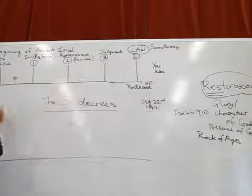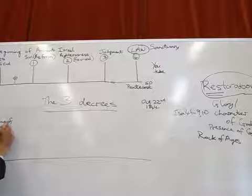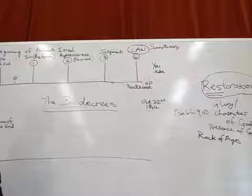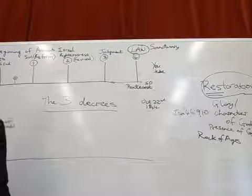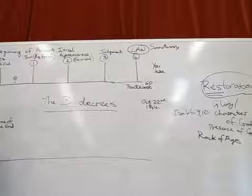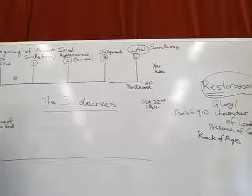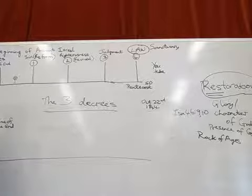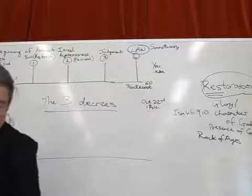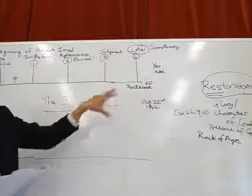This is the timeline of the three decrees. We can see from the timeline we've got already up here that in each history there's a time of the end and this marks a prophetic fulfillment of prophecy. In this history we're looking at 70 years of captivity. So the time at the end is always preceded by a period of darkness so we have a darkness here and this is when the children of Israel are in captivity for 70 years.